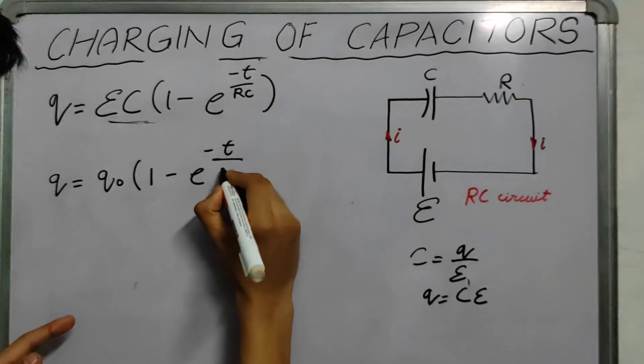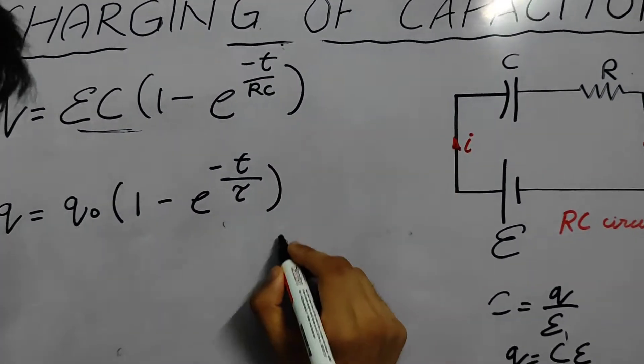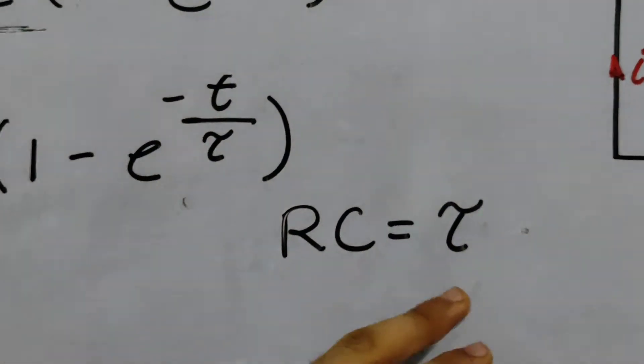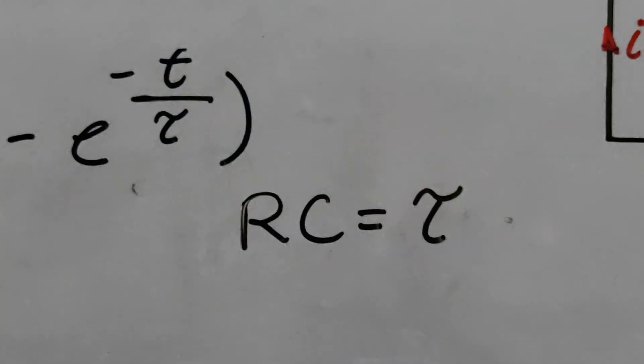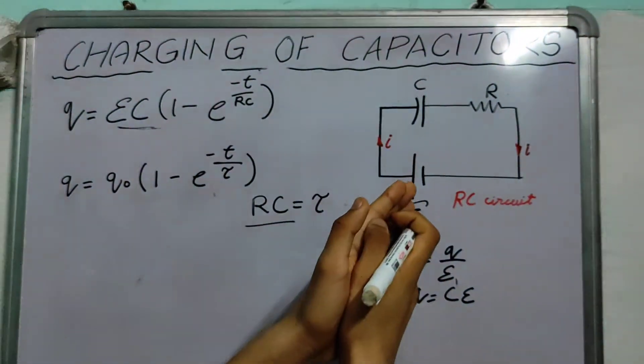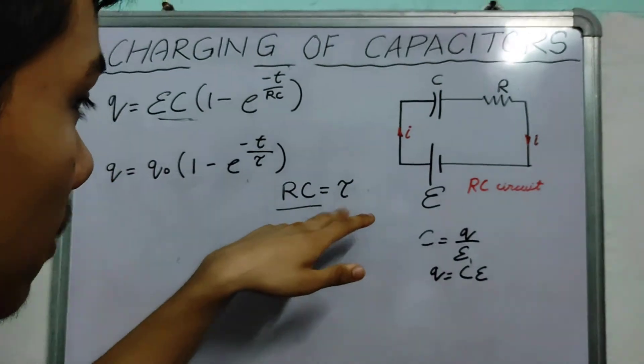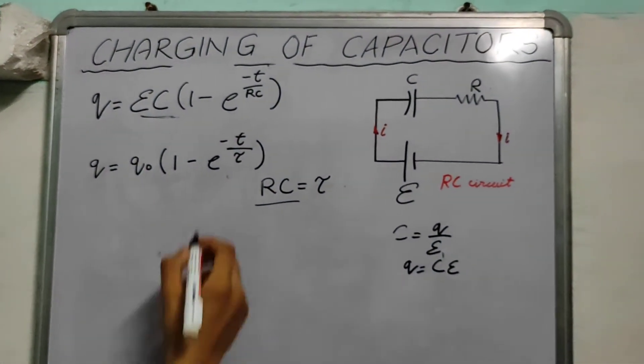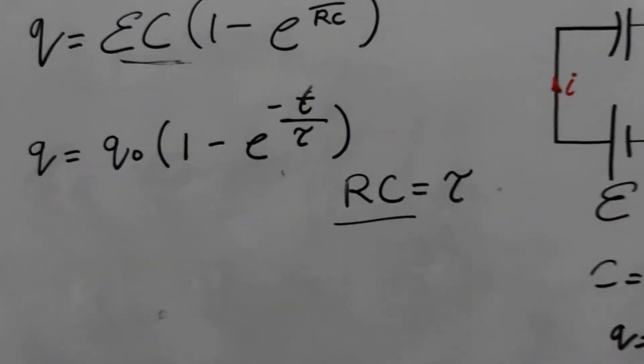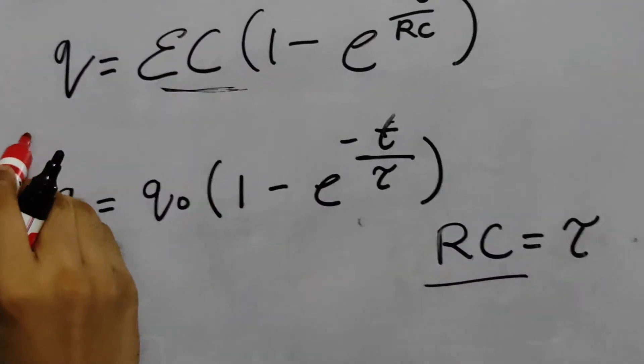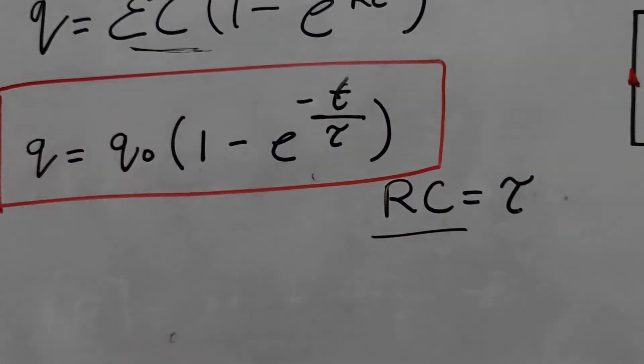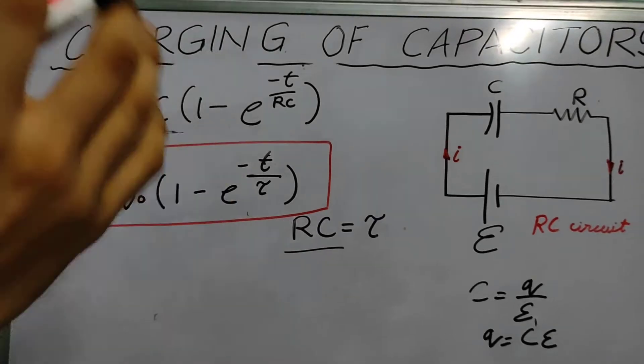Now we can write this as tau. RC as tau. This is known as time constant of an RC circuit. This is constant. You have a resistance, you have a capacitor. So multiply these together, you get a time constant. That is represented by tau. This is another form of our equation. Q is equal to Q naught 1 minus e to the power minus T by tau.